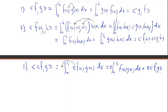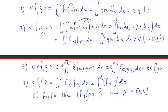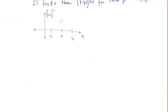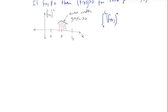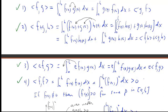Property four: the inner product of f with itself equals the integral from a to b of f(x) squared dx. If f is not the zero function, then f squared must be positive at some point p in the interval, meaning the graph of f squared is above the horizontal axis on an interval around p, giving positive area under that graph. Since f squared never dips below zero on [a, b], the integral over [a, b] must be positive. This proves all four properties.